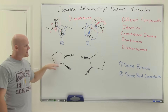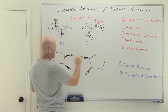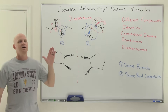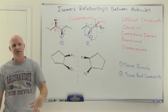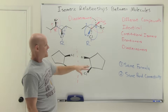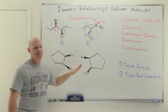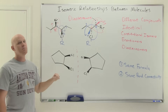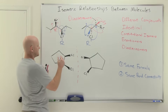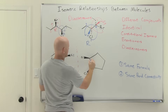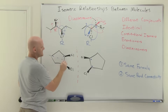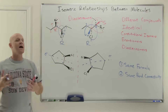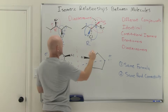The next example trips up a lot of students — they see the mirror image drawn right there and immediately say 'enantiomers.' But remember: a compound and its mirror image are enantiomers only if the compound is chiral. Same formula, same bond connectivity. They are mirror images, and they do have two chiral centers — but if you look closely, these molecules have an internal mirror plane, a sigma plane, making them achiral. Specifically, that makes them meso compounds.